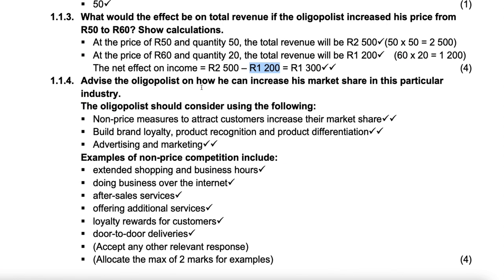The last question says: advise the oligopolist on how to increase market share. Non-price measures include attracting customers, increasing market share, building brand loyalty, product recognition, product differentiation, advertising, and marketing.